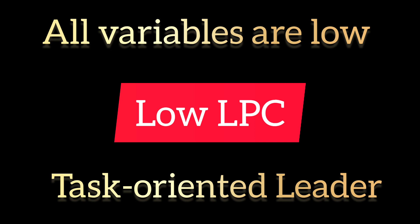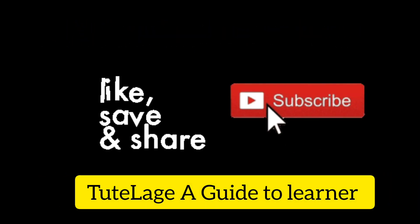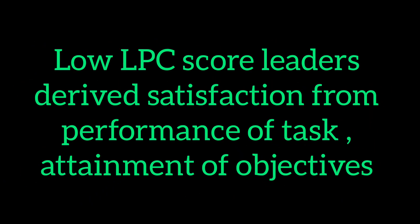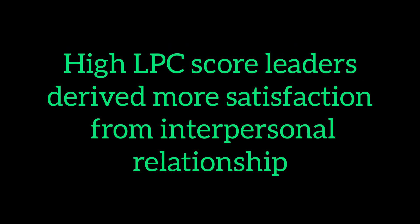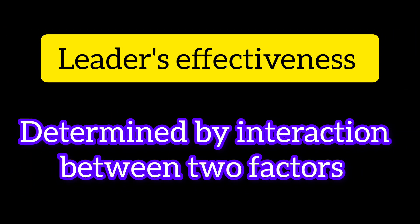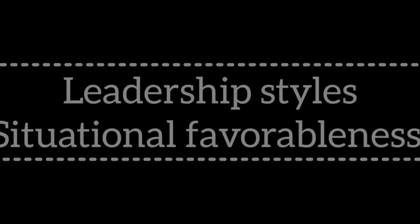To summarize: low LPC score leaders derive satisfaction from the performance of tasks and attainment of objectives. High LPC score leaders derive more satisfaction from interpersonal relationships and evaluate their least preferred co-workers in more favorable terms. A leader's effectiveness is determined by the interaction between the leader's style of behavior and the favorableness of situational factors — these are the two most important factors of this model.